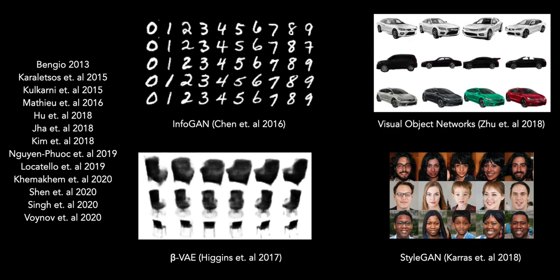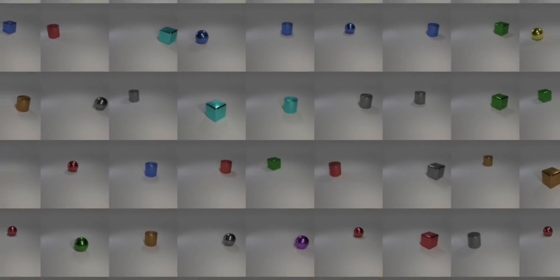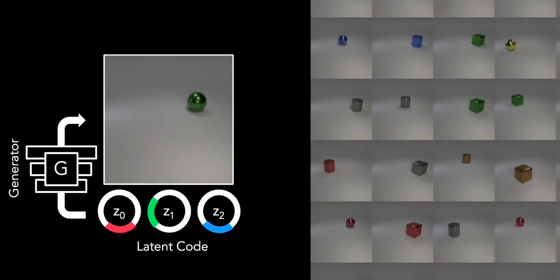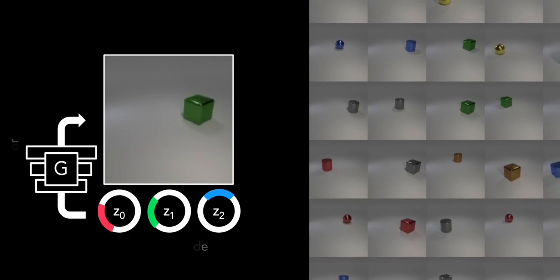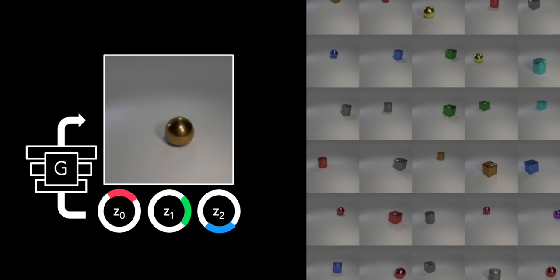What does it mean to disentangle a neural network? Intuitively, we think it means that if we train a generative model G on a dataset like Clever, which has variations spanning shape, color, and position, what we want to get is something like this. Notice how each z component changes the image. z0 changes position, z1 changes color, and z2 changes shape. In fact, this is the result of our method.